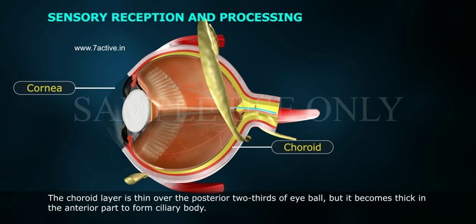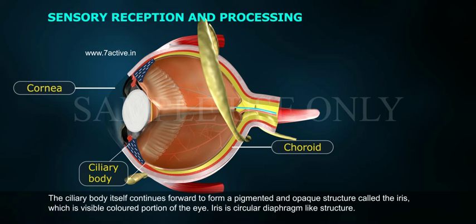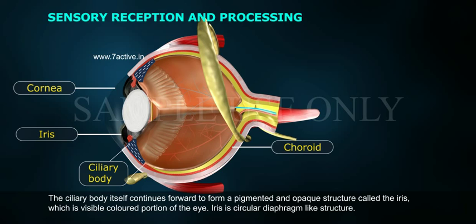The choroid layer is thin over the posterior two-thirds of the eyeball, but it becomes thick in the anterior part to form the ciliary body. The ciliary body continues forward to form a pigmented and opaque structure called the iris, which is the visible colored portion of the eye. The iris is a circular diaphragm-like structure.